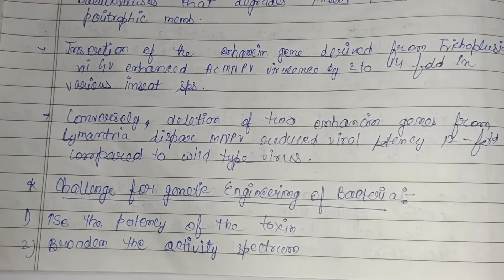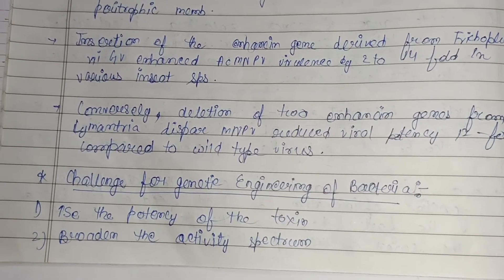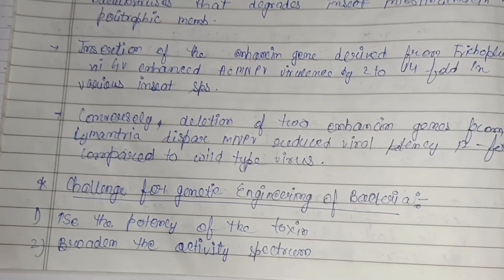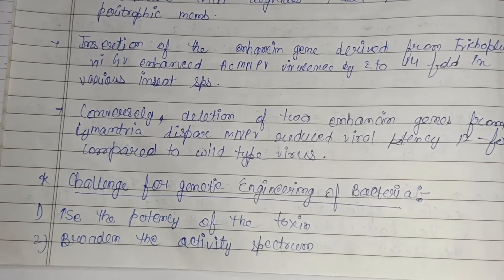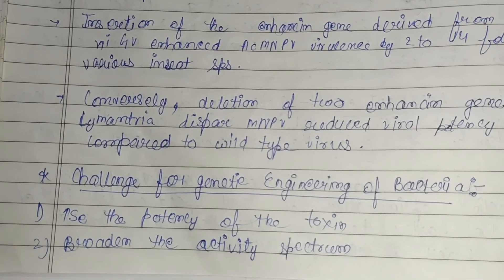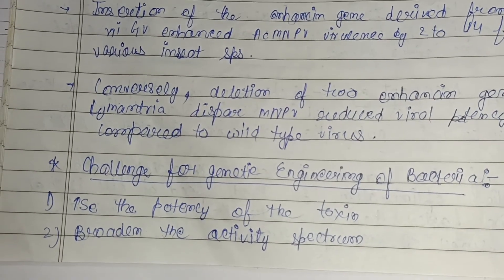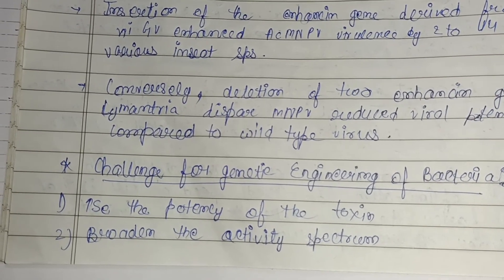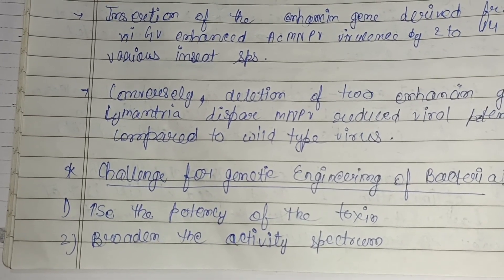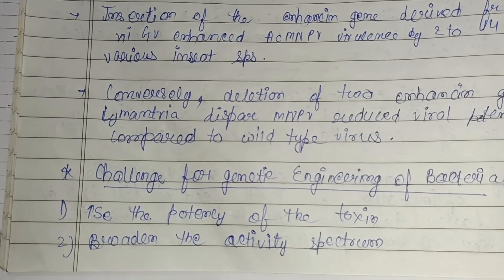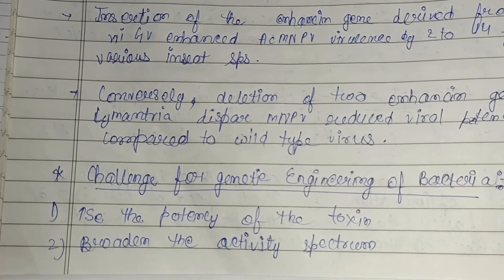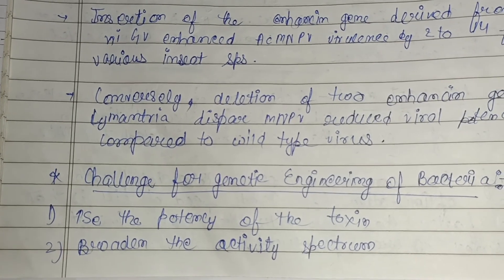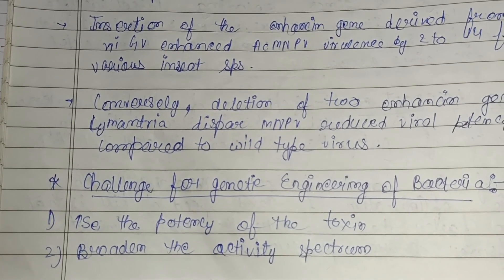Challenges for genetic engineering of bacteria include increasing the potency of the toxin — since bacteria secrete many toxins — and broadening the activity spectrum. In conclusion, plant pathogens are a worldwide problem. Farmers rely on chemicals which have carcinogenic effects and cause environmental pollution, so biological control could be the best alternative. Development of mutant strains is an important technique in strain improvement toward plant pathogen suppression, yielding reliable strains for biocontrol.